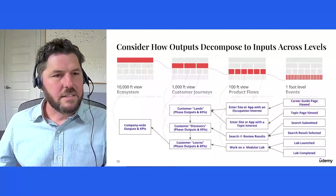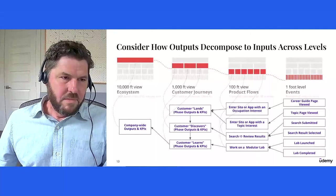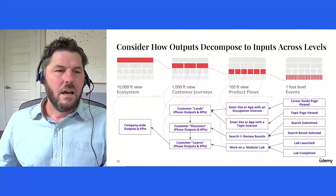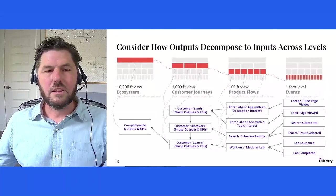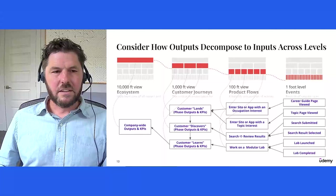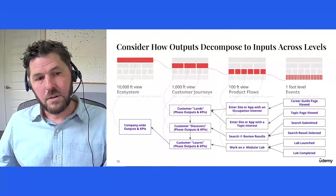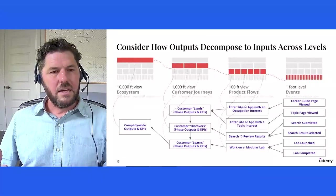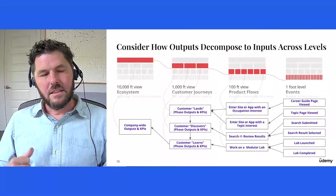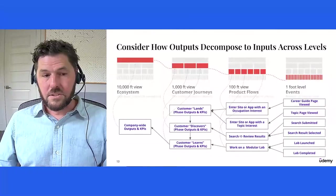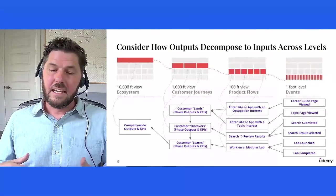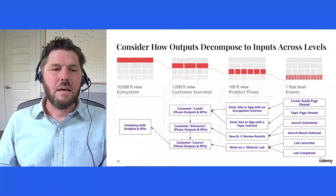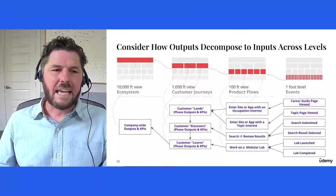So let's look at how outputs decompose to inputs across these levels. At the ecosystem level, we can imagine we have a company-wide output or a KPI. At the customer journey level, our customer journeys divide into phases. And so if we think about a learner, the learner oftentimes is motivated for some reason to learn, and they become aware that they can do so on our platform. They land in Udemy, in the native apps, or on the website. And so that land phase has its own set of essential outputs and KPIs. After they land, they move into a discovery phase. And that has its own set of key outputs and KPIs. And perhaps they identify learning activities that they want to engage in. They move into a learning phase that has its own outputs and KPIs. But these are still outputs. They're higher level. They're lagging. We don't directly control them.